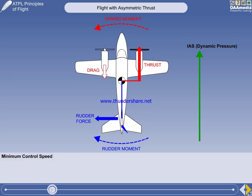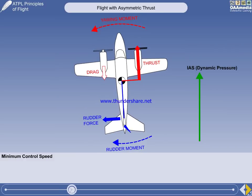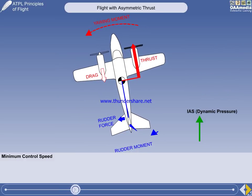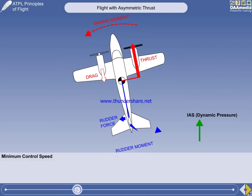If the IAS — the dynamic pressure — is just sufficient to produce enough rudder moment to counter the yawing moment, there will be no yaw. However, any decrease in the IAS will reduce the rudder force, and the aircraft will yaw uncontrollably towards the dead engine.